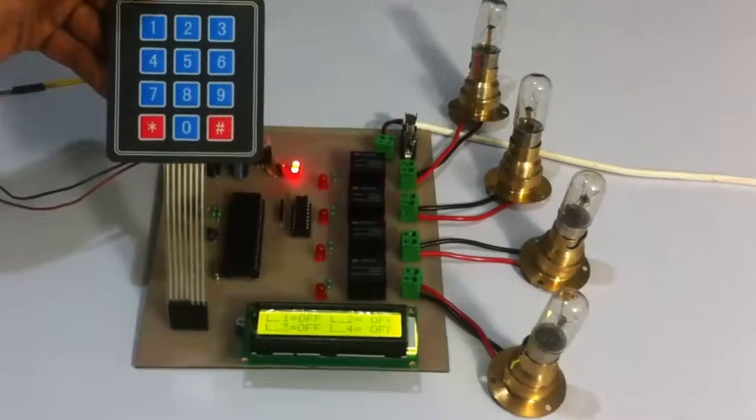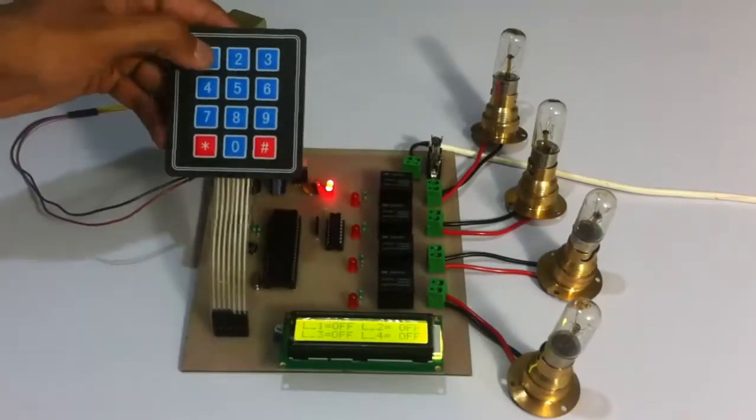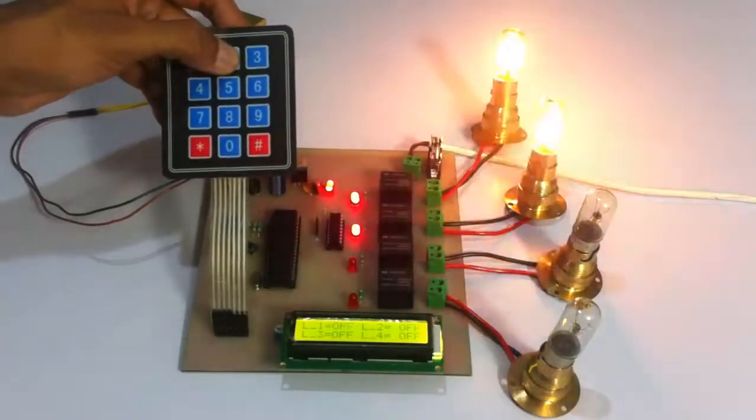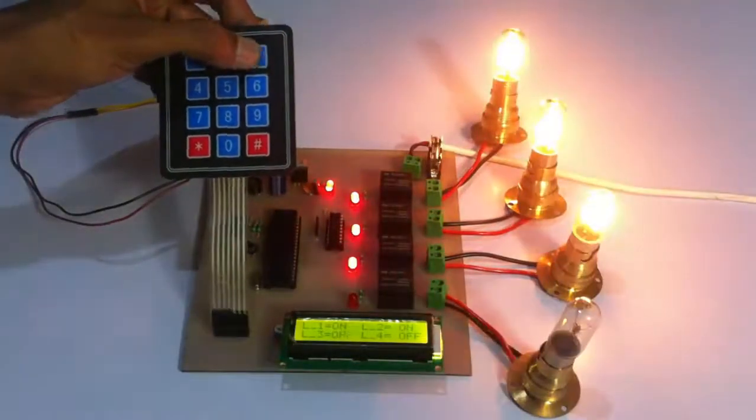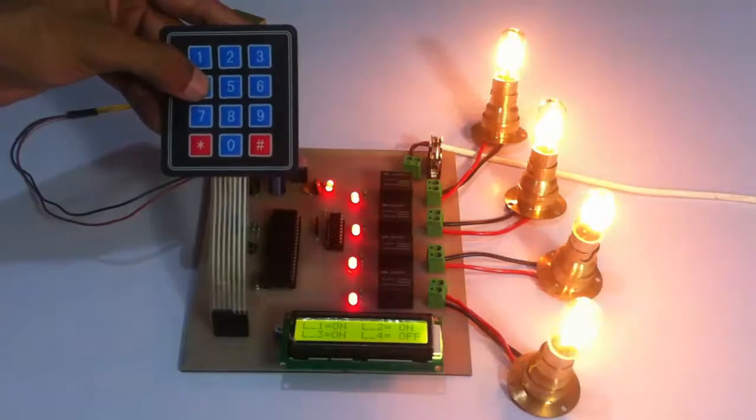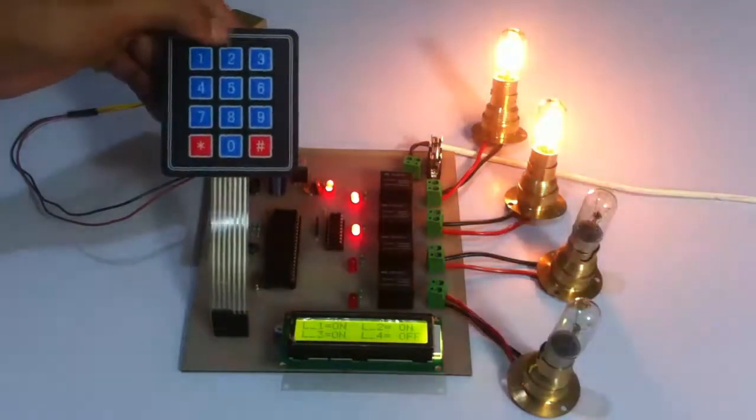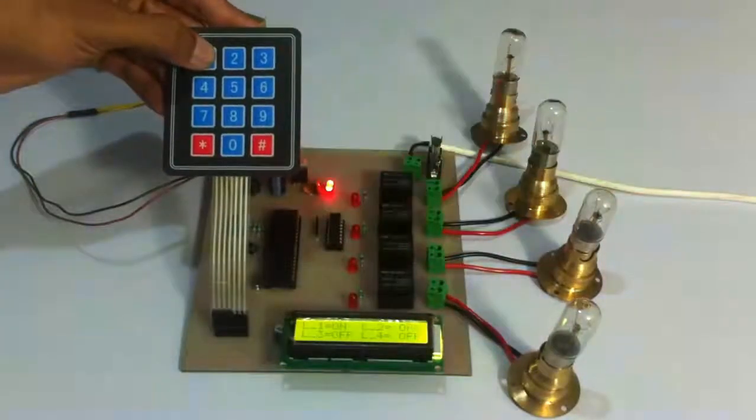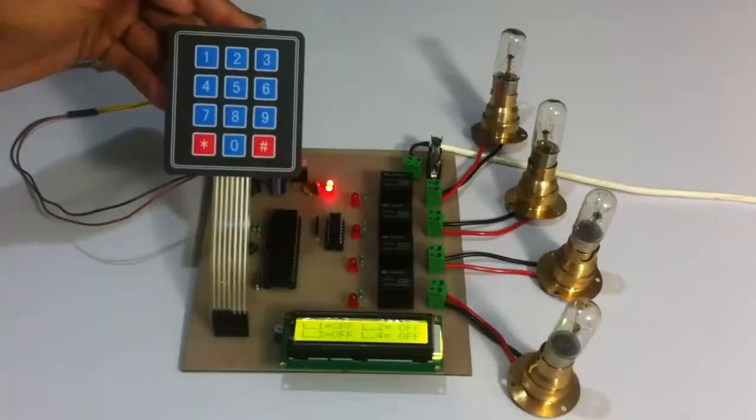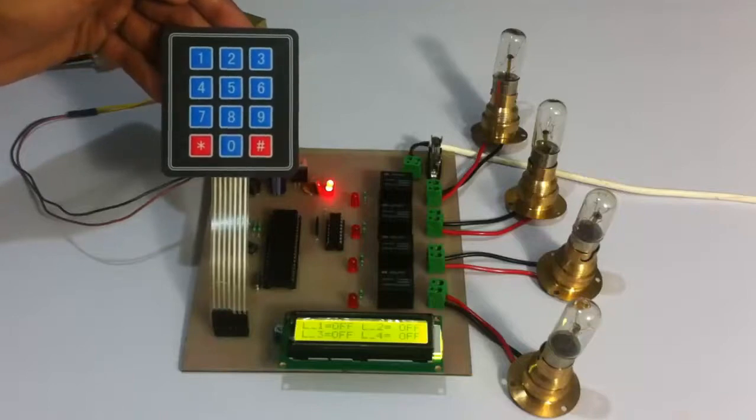We enter the new password as 1234 and we have access in the system, which we can switch on and off loads as desired. So this is how the password-based circuit breaker project works. Thank you.